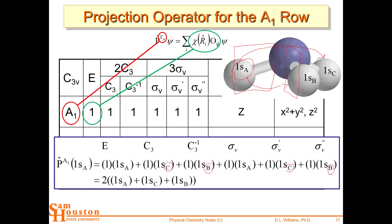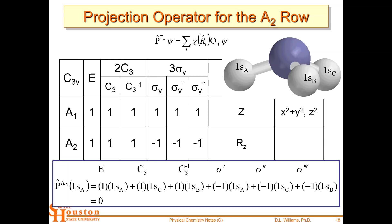For the A1 row all characters are plus one, so we get plus one for all operations. In the end, we get two times each of 1sA, 1sB, and 1sC, all the same sign — reducing to 1sA + 1sB + 1sC, the orbital where all hydrogen 1s orbitals have the same color. The A2 row cancels out and gives zero.